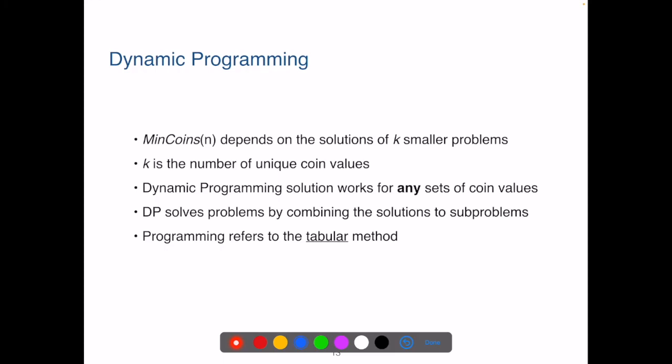So the way we solved the coin change problem is called dynamic programming. Dynamic programming can be used when the original problem can be decomposed into smaller problems. These smaller sub problems repeat. Dynamic programming solves all sub problems in a sequential fashion. Why the name, you may wonder. What's dynamic and why it's programming? Programming refers to the constructing of a table process, and dynamic means the sequential process of building the table.